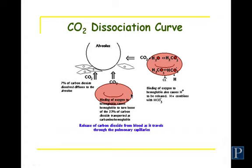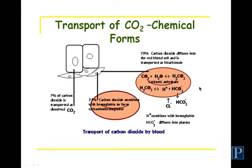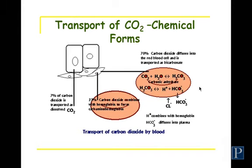Looking at the reverse reaction: bicarbonate re-enters the red blood cell, combines with a hydrogen ion to form carbonic acid, and then carbonic acid dissociates into CO2 and water. CO2 crosses over and goes into the alveolus, facilitated by carbonic anhydrase. The hydrogen ion involved here was previously buffered by hemoglobin — hemoglobin contains many histidine residues, and histidine binds hydrogen ions to prevent them from causing problems.